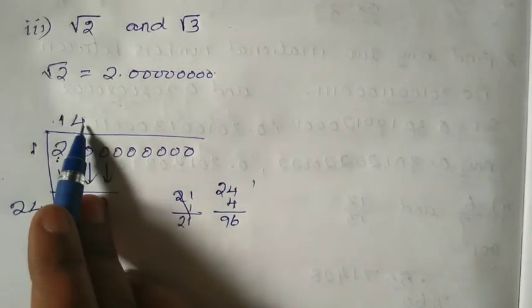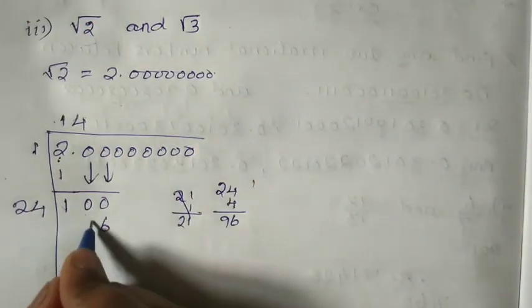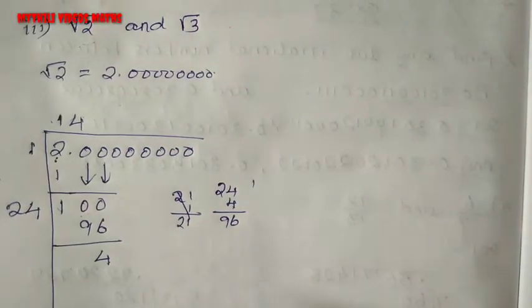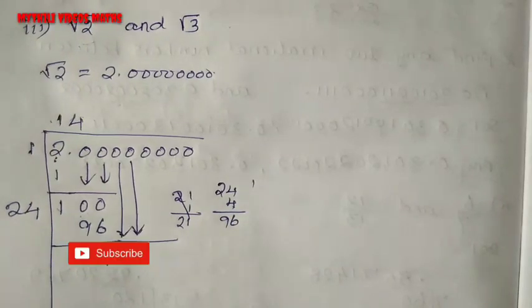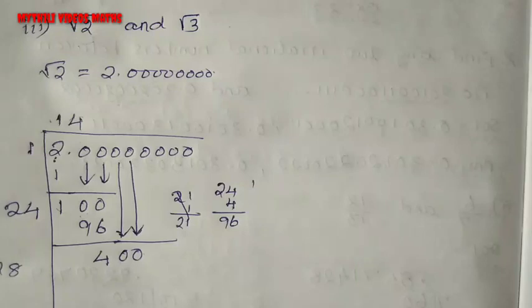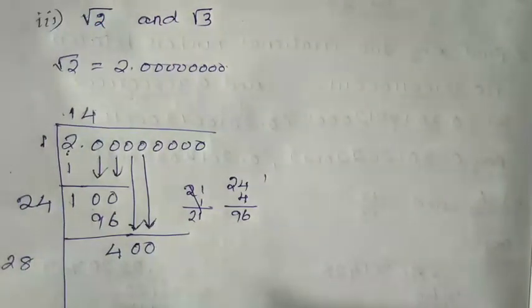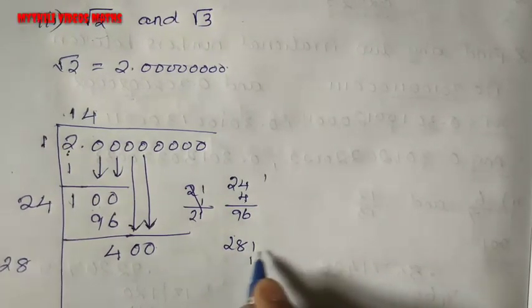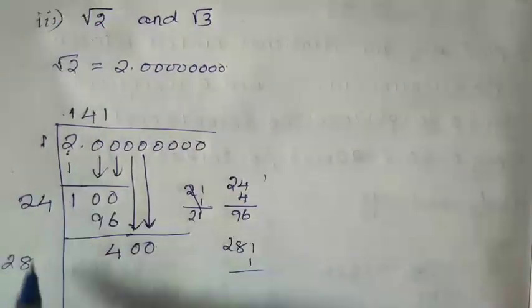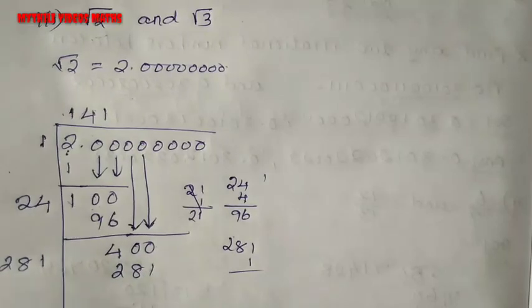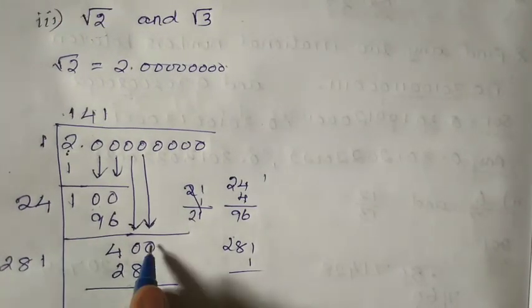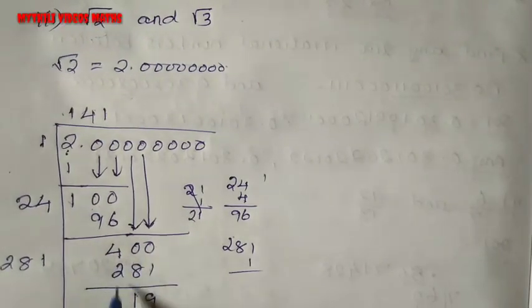Now we have to multiply: 4 and 24. Already put 1, 2nd up. 4 times 4 is 16, remainder is 4. 2 times 4 is 8, 8 plus 1 is 9 — 96. When you are subtracting these two values, next is 0. Then 400 — same procedure. So 2 into 14 is 28. Further I am taking 28. 1 into 281. When we are subtracting these two values: 10 minus 1 is 9, 9 minus 8 is 1, and 3 minus 2 is 1.